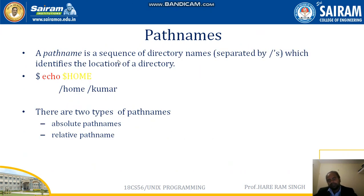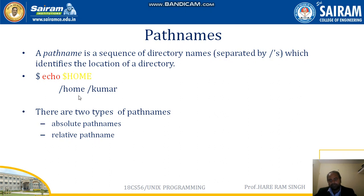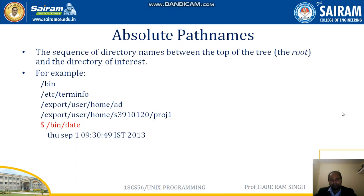A path name is a sequence of directory names separated by a forward slash which identifies the location of a directory. For example, echo $HOME displays the location of the present user, such as /home/kumar. There are two types of path names: absolute path names and relative path names.